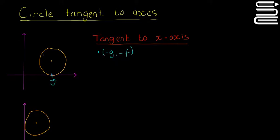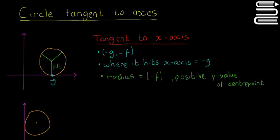The radius is the same all the way around the circle. If the radius goes directly down, that distance is the same as how high the centre point is up the y-axis, which is -f. So the radius equals the modulus of -f — that is, the positive y-value of the centre point. Whatever the y-value of the centre point is, take its positive value and that equals the radius.